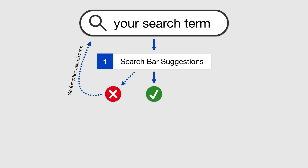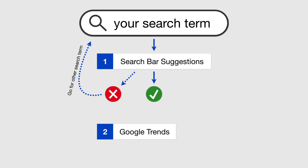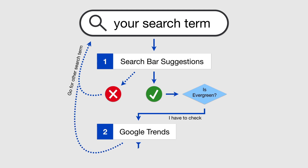The next step would be to look at Google Trends. Although this tool has 'trends' in its name, for our purposes it is useful to see if the search volume has an all-time high. For example, 'how to tie a tie' is an evergreen topic — people are searching for it all the time. Make sure to select YouTube search here to look at YouTube search volume. So if you are not sure if your search term is searched all the time, use Google Trends to verify that. Depending on what it says, you may look for a different search term or go for it.